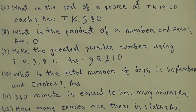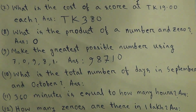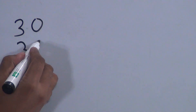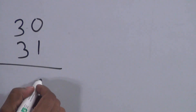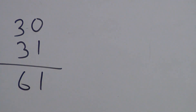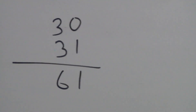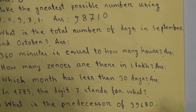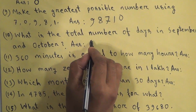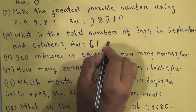Question 10: what is the total number of days in September and October? September has 30 days and October has 31 days. Total days = 30 + 31 = 61. The answer is 61 days.